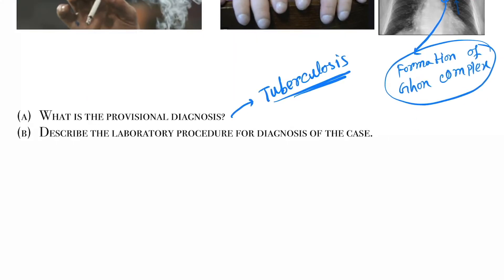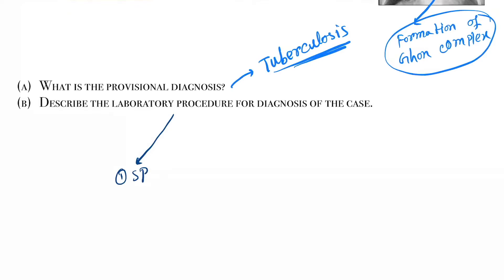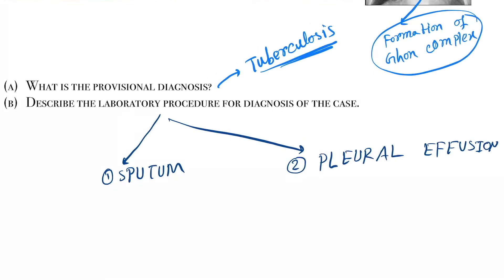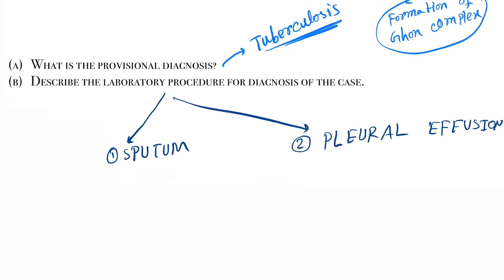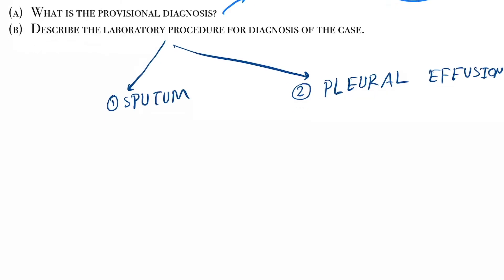Now, the laboratory procedures by which you can confirm the diagnosis of tuberculosis. You have to test two things: number one is sputum, and number two is pleural effusion. Sputum can be tested by three methods. The first one is staining — you can do staining.